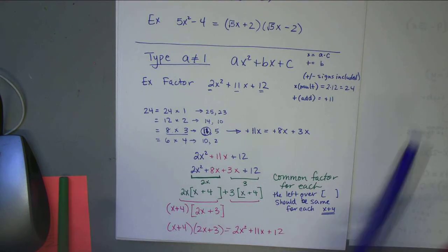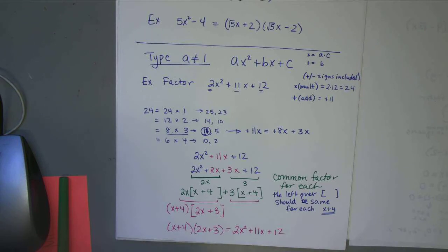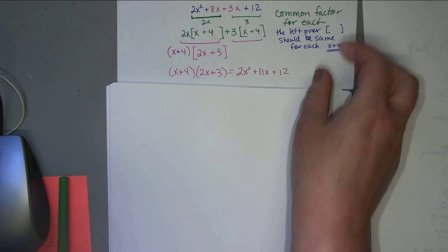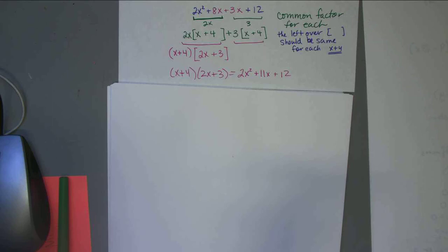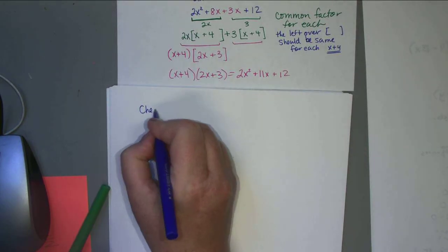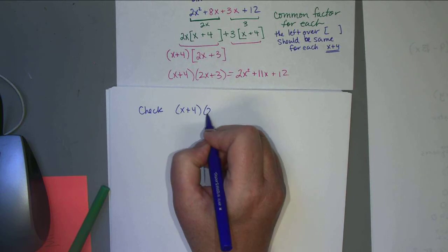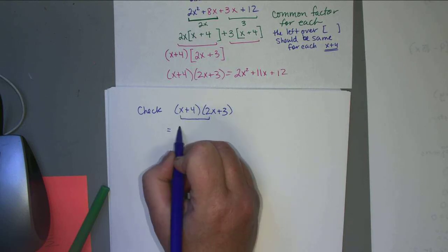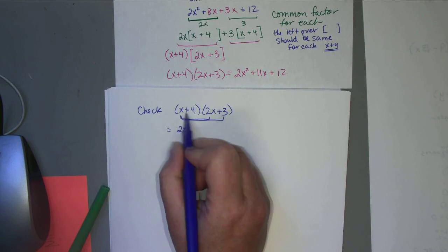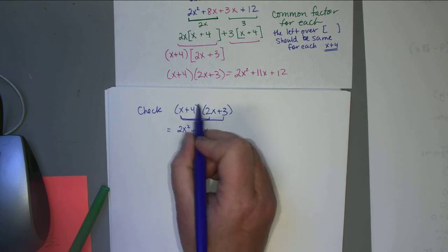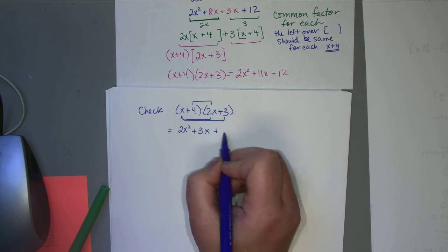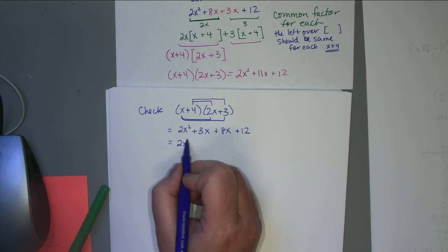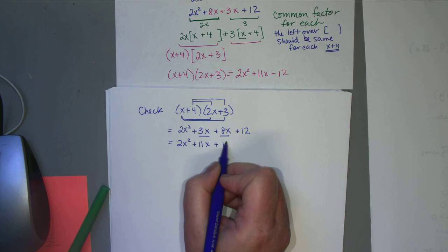We'll check this by FOIL. (x+4)(2x+3): first gives 2x², outside gives 3x, inside gives 8x, last gives 12. So 2x² + 3x + 8x + 12 = 2x² + 11x + 12. That's what we started with — the check confirms the answer.